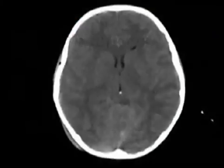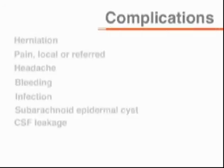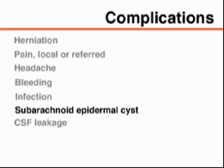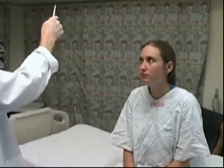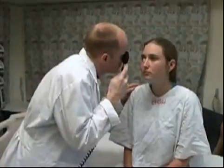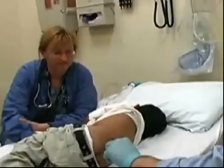Lumbar puncture has numerous possible complications, including cerebellar herniation, referred pain, headache, bleeding, infection, the formation of a subarachnoid epidermal cyst, and leakage of spinal fluid. You can avoid many of these complications by conducting a careful assessment of the patient before the procedure, including a thorough neurologic examination and retinoscopy, and by monitoring the patient throughout the procedure.